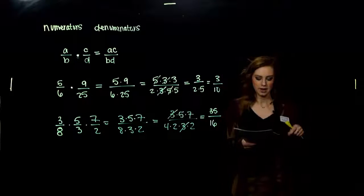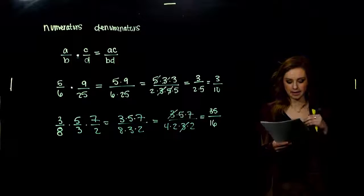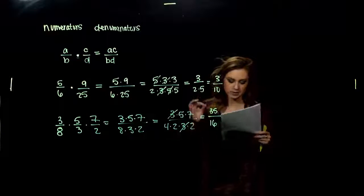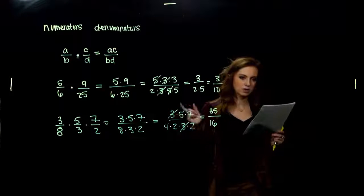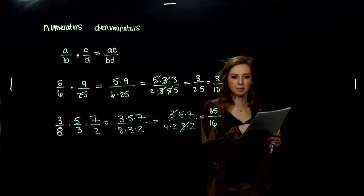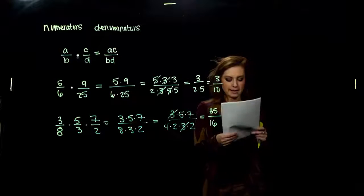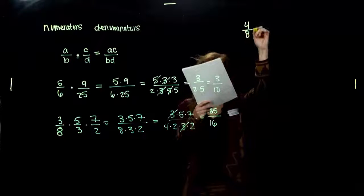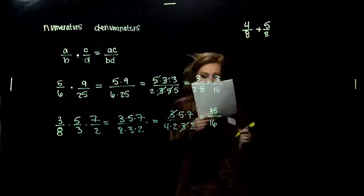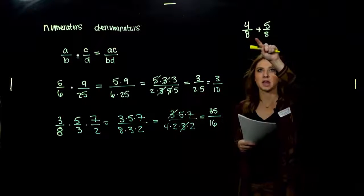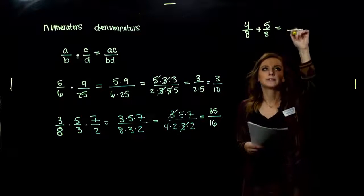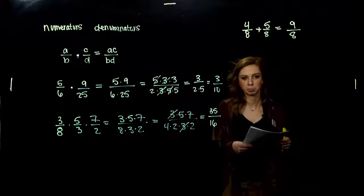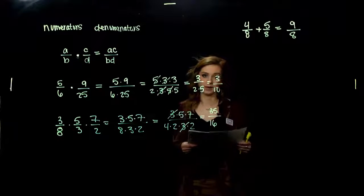Now let's look at addition. If I'm trying to add fractions with like denominators, what happens? To add fractions when the denominators are the same, we add the numerators together and keep the same denominator. So for example: 4 over 8 plus 5 over 8. We keep that same denominator and add across the numerators. We're looking at 9 eighths. When we have those same denominators, it's pretty simple.